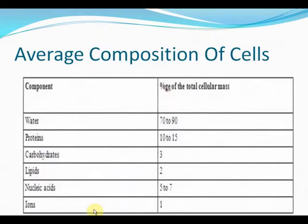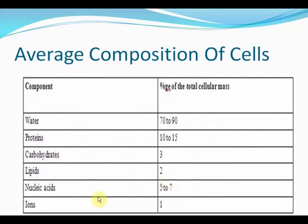The average composition of cells: the water content in a cell can be 70 to 90 percent, proteins 10 to 15 percent, carbohydrates 3 percent, lipids 2 percent, nucleic acids 5 to 7 percent, and ions 1 percent.